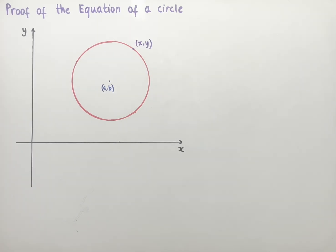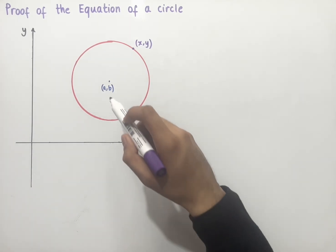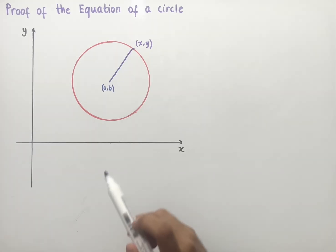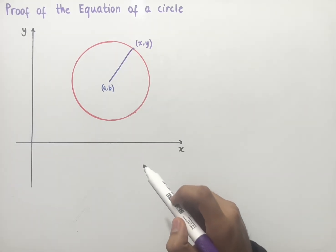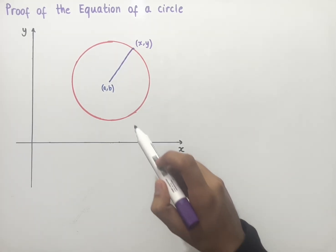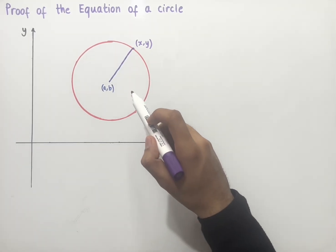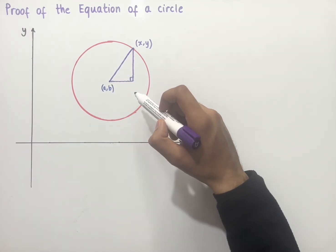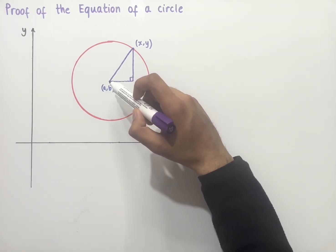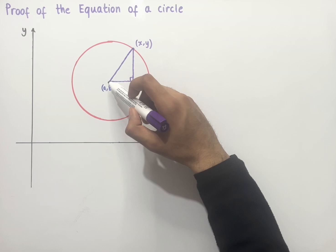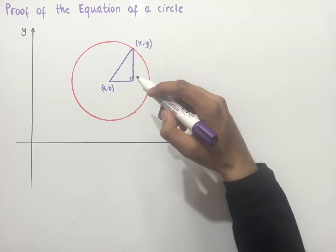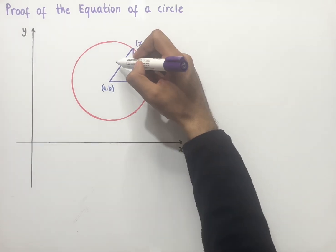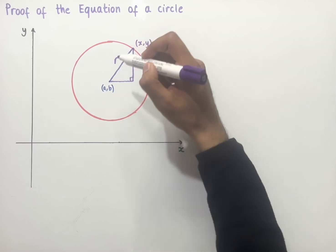We can now join this point with the center of the circle and create a right angle triangle which looks something like this. Now let's consider the side lengths of this right angle triangle. Any length from the center of a circle to its circumference is always called the radius, and so in this case this length is the radius.